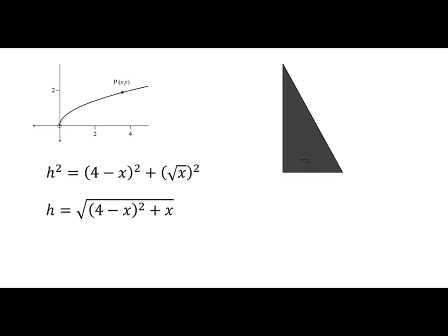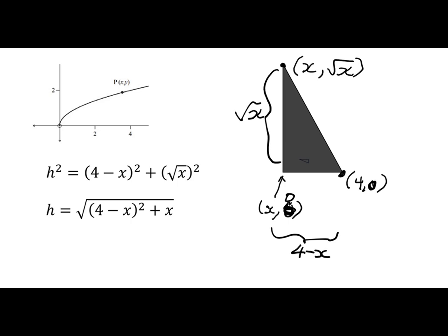So I've done the setup here to speed us up a wee bit. This point here is the point (4, 0). This is my other point. This is on the curve, which means we know that its coordinates are x and root x. So the coordinates here are x and 0. This horizontal distance is 4 minus x. The vertical distance here is going to be root x.